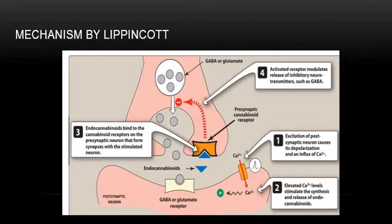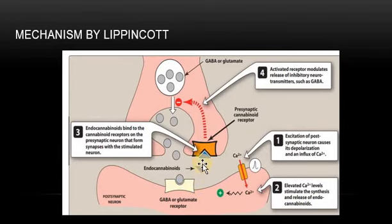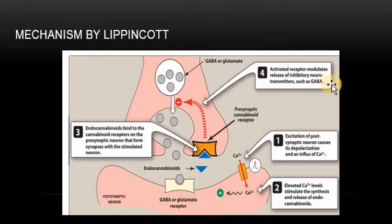Cannabinoids stimulate CB1 receptors. Stimulation of endocannabinoid receptors at the periphery causes depolarization and influx of calcium. Increased calcium levels stimulate the synthesis and release of endocannabinoids, which bind to cannabinoid receptors. After binding, they stimulate post-synaptic neurons, and the activated receptor modulates the release of inhibitory neurotransmitters such as GABA or glutamate.